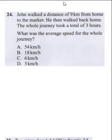Question 24 says John walked a distance of 9 km from home to the market. He then walked back home. The whole journey took a total of 3 hours. What was the average speed for the whole journey? The first thing you need to realize is John walked straight to the market and spent 9 km.